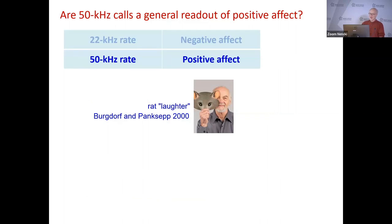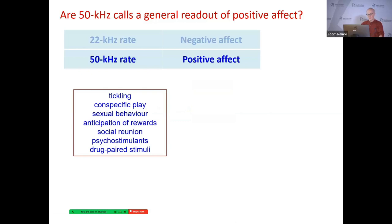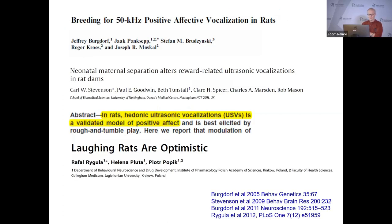What about the idea that 50 kHz calls, and particularly the 50 kHz call rate, is an index of positive affect? Well, clearly there are quite a number of positive emotional situations where rats make 50 kHz calls, and this idea has given rise to numerous studies in the literature where people say we use 50 kHz USVs as a readout of positive affect — which I think needs to be qualified.